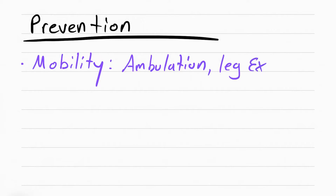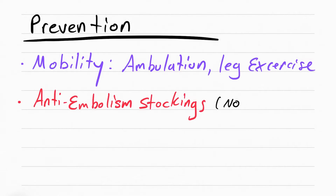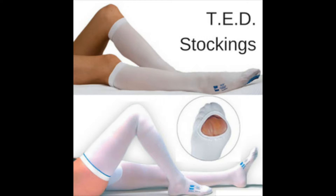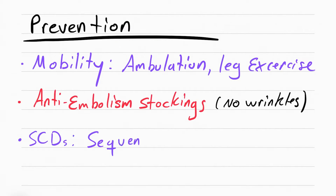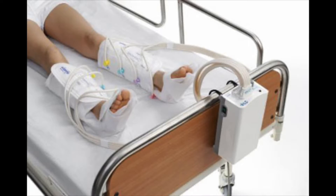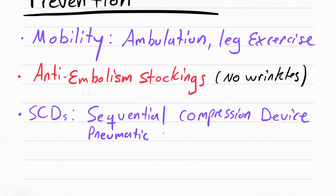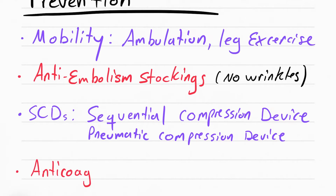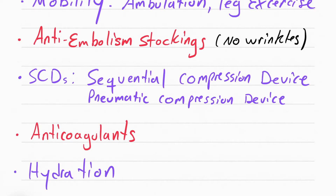How you prevent DVTs from occurring is by having the patient be mobile — make sure they ambulate and perform leg exercises. You can also put anti-embolism stockings, sometimes called ted hose stockings; make sure there are no wrinkles when you put them. You can also put SCDs — sequential compression devices — on a patient; these go around the leg and inflate at different intervals to help with blood flow, and are sometimes called pneumatic compression devices. Anticoagulants can also be used to prevent DVTs. And make sure the patient is hydrated to prevent the blood from being viscous or thick.